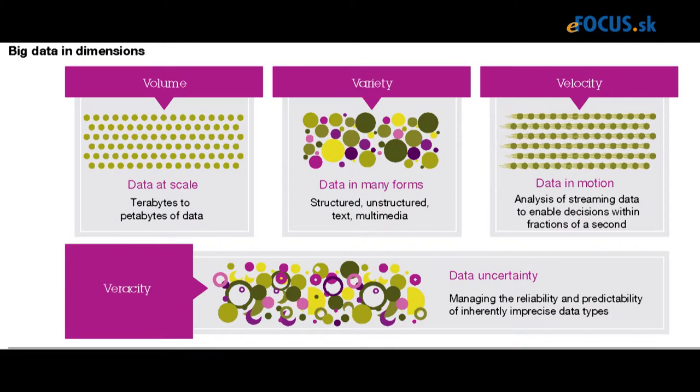The third characteristic of big data is variety, which really defines the structure that the data is in. Traditional computing such as data warehousing or relational databases relied on data being in very specific structures — a date column had a date value in a specific form, a salary column had a decimal number, a name column had a character string — and as data was entered into the database, the system validated that those data types were exactly correct.